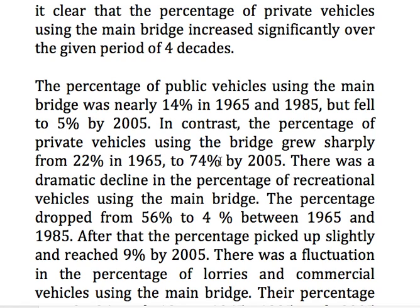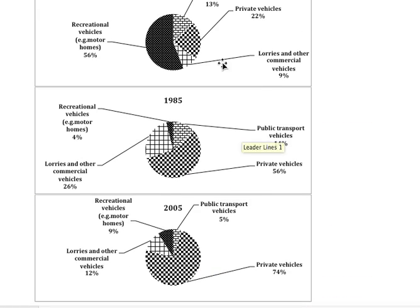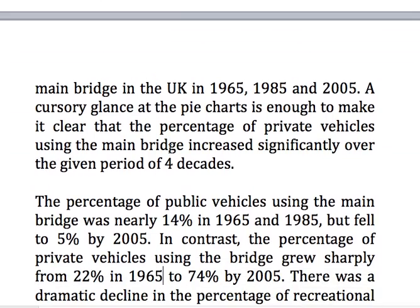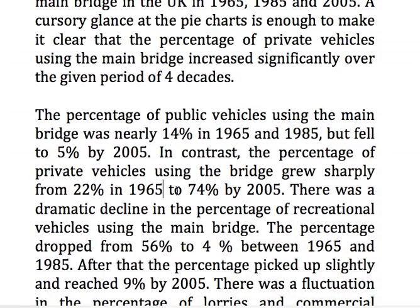There was a dramatic decline in the percentage of recreational vehicles using the main bridge. You can see recreational vehicles here at 56% and here at just 4% — a dramatic decline from 56% to 4%. Note the adjective-noun combination: 'dramatic' is the adjective, 'decline' is the noun, preceded by 'there was a'. The percentage dropped from 56% to 4% between 1965 and 1985.